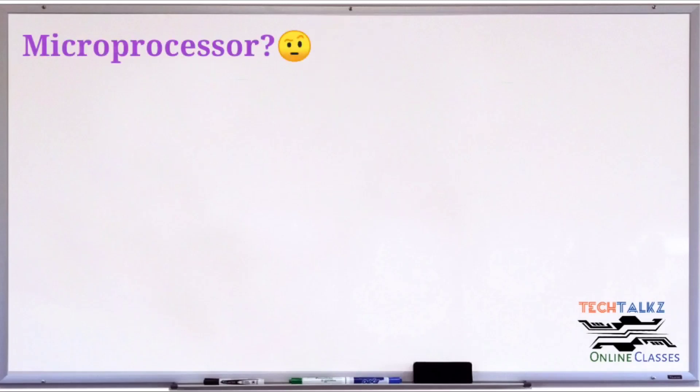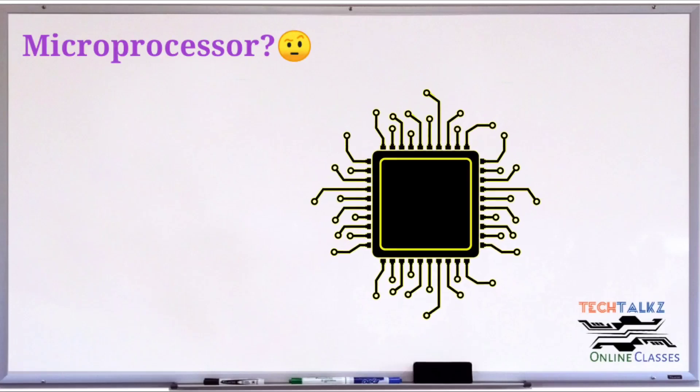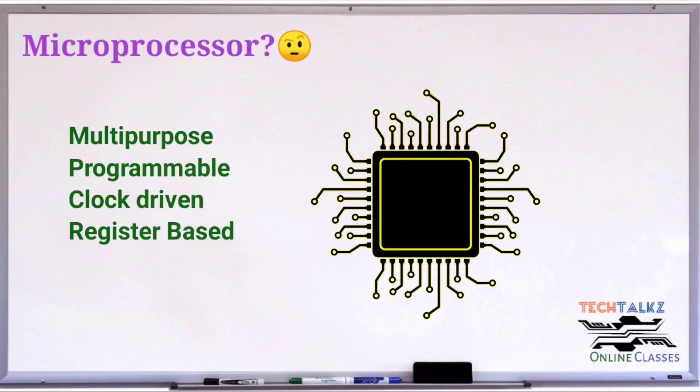First, we have the microprocessor. The definition is: a microprocessor is a multipurpose, programmable, clock-driven, register-based electronic device that reads binary instructions from a storage device called memory. It accepts binary data as input and processes the data according to those instructions or commands, and provides results as output.